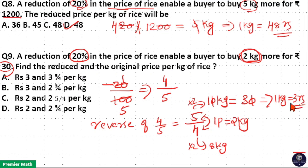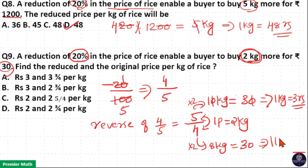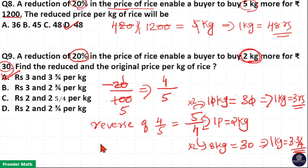This is the reduced price. Now, this 8 kilogram also costs Rs. 30 — this was the original price. Which means 1 kilogram costs Rs. 3.75. So option A is your answer. You can do it either way.